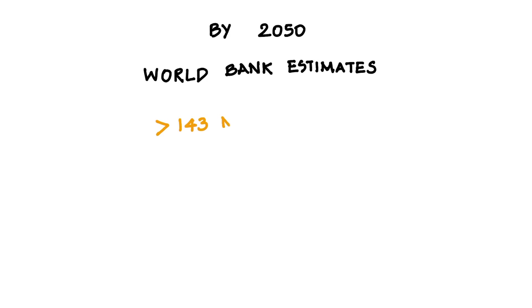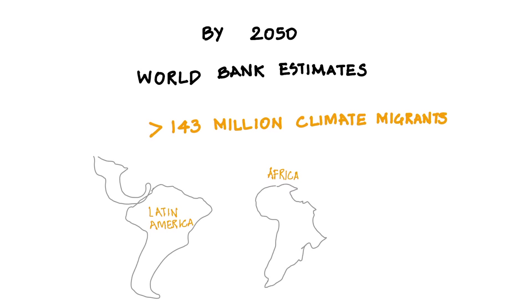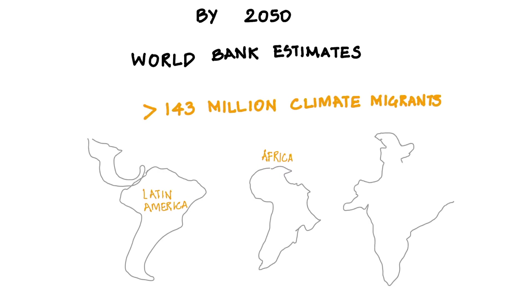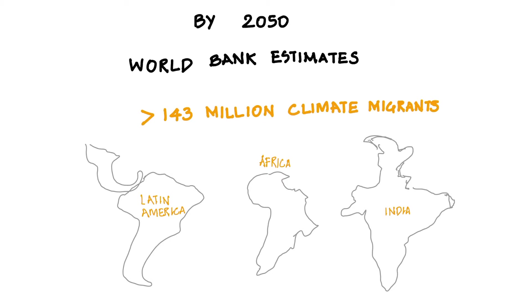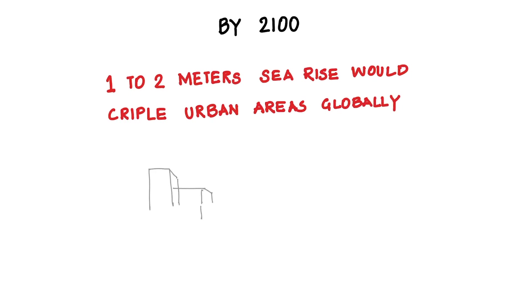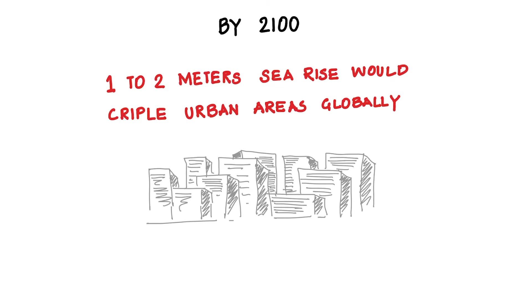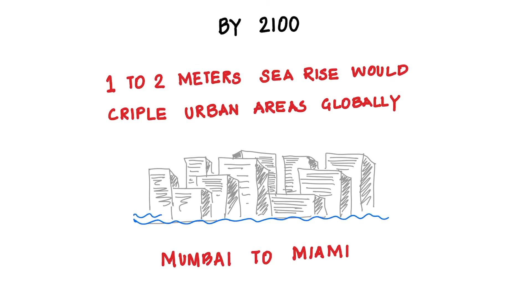By 2050, the World Bank estimates that 143 million people in just Latin America, Sub-Saharan Africa, and India will become climate migrants — forced out of their land due to flooding and other climate effects. By 2100, scientists have been raising their projections, and many now expect a 1 to 2 meter rise in sea level. This would cripple many urban areas around the world, as 75% of global megacities lie on the coast. Our own generation may see cities from Mumbai to Miami become increasingly uninhabitable and at least partially submerged or at heightened risk of flooding, even by 2050.